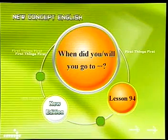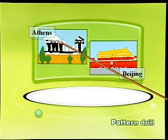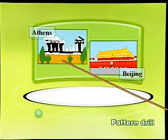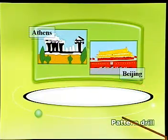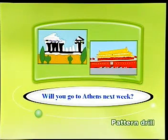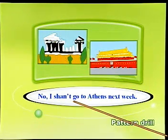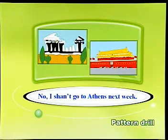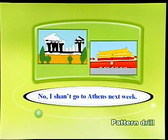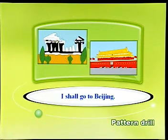When did you go to? Or when will you go to? Athens，雅典的神庙；Beijing。Will you go to Athens next week? No, I shan't go to Athens next week. Shan't是shall not的缩写形式，但是在现代英语当中常常用won't来代替shan't。I shall go to Beijing. Shall我们还可以用will来代替。